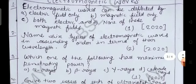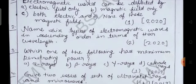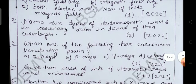Now next, name six types of electromagnetic waves in ascending order in terms of their wavelength. So this is two marks question asked in 2020.